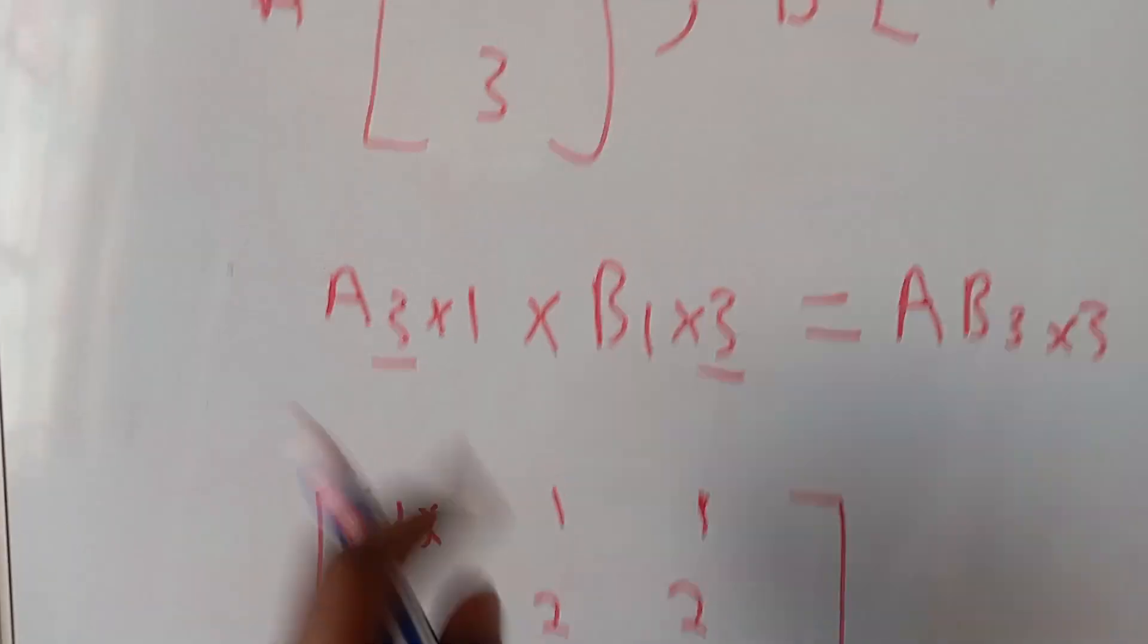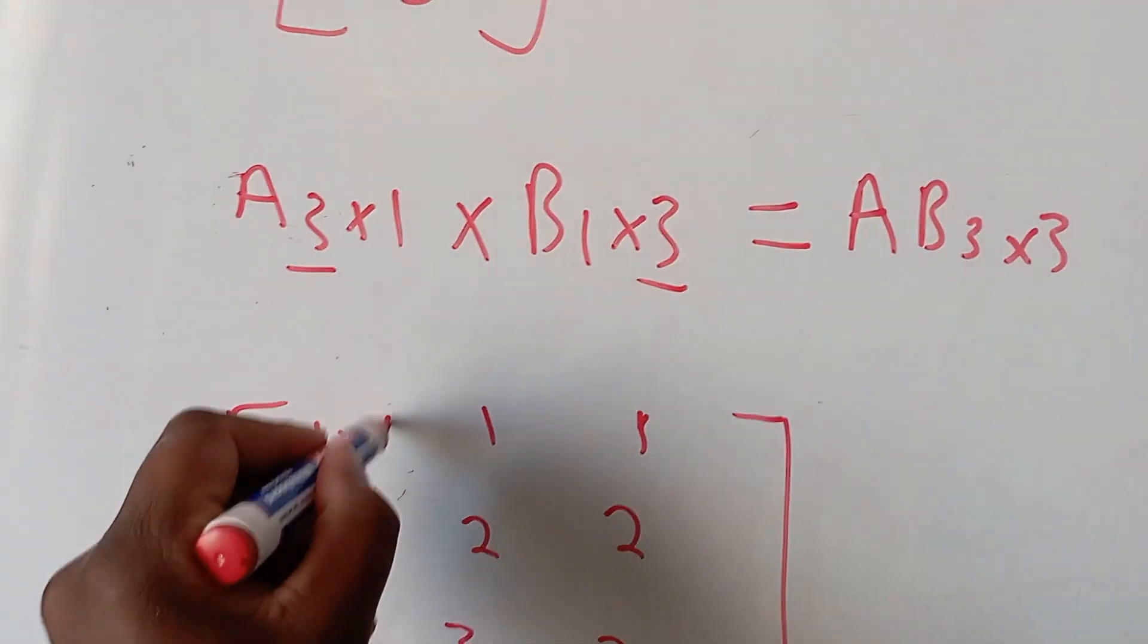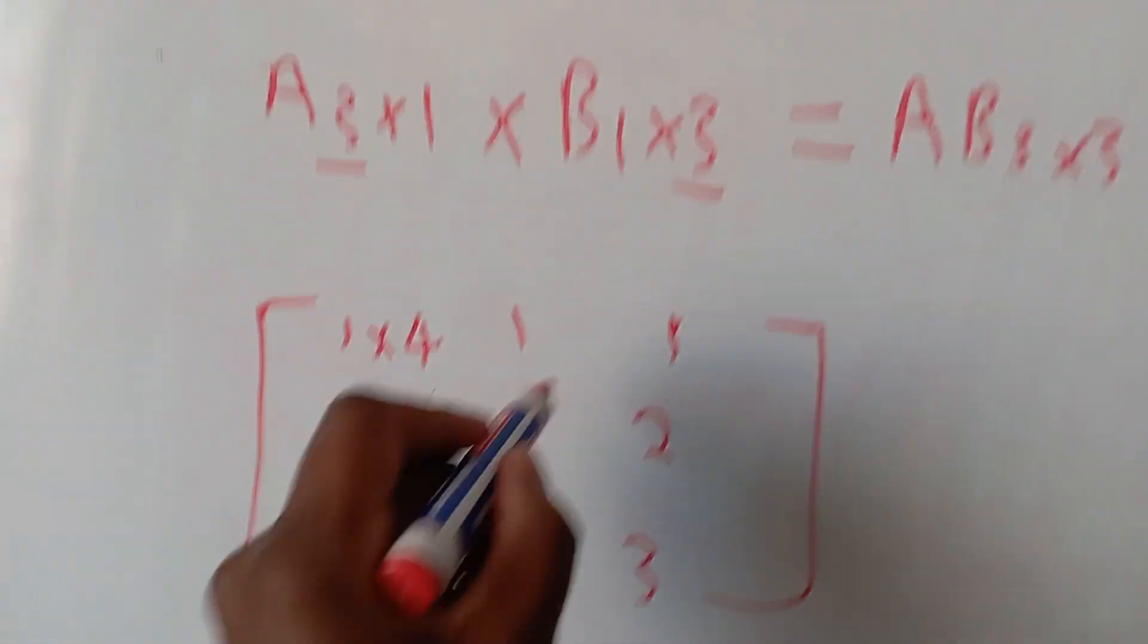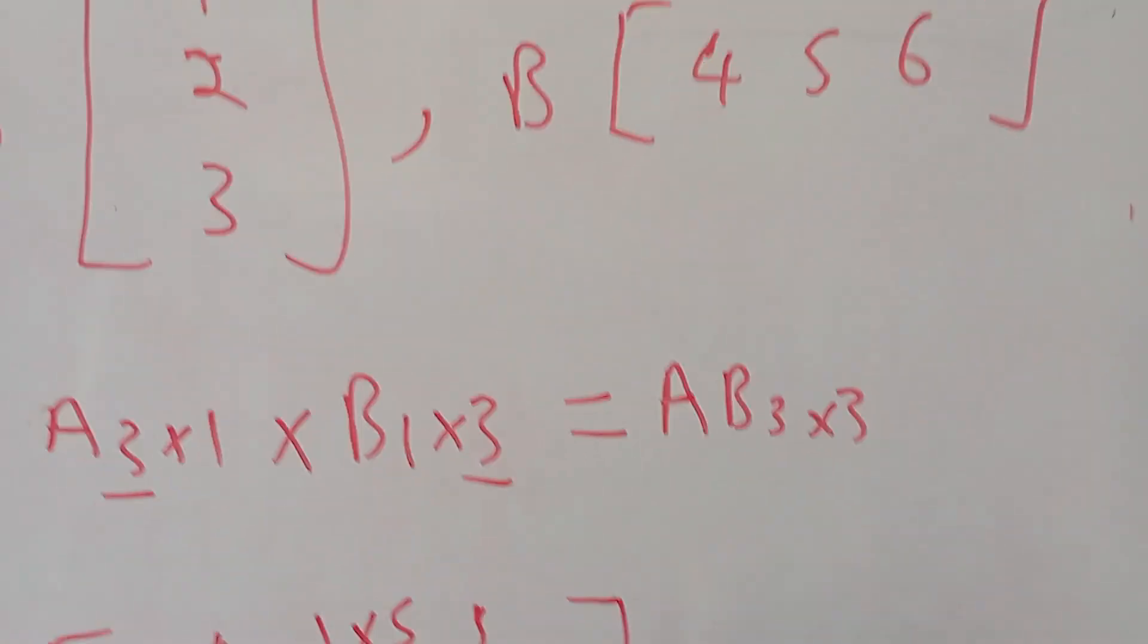Now for the first entry, it's going to be 1 times 4. Second entry by 5, third entry by 6.